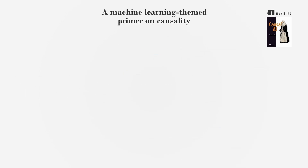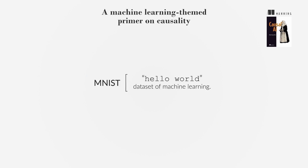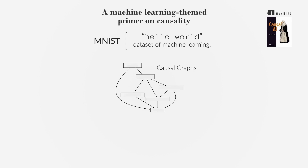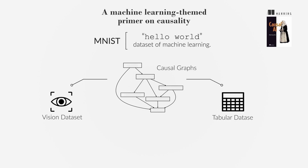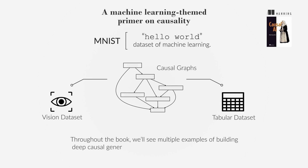In this chapter, we introduce causal modeling using the MNIST dataset — the Hello World dataset of machine learning. We'll see how causal graphs work just as well with this well-known computer vision dataset as they do with the tabular datasets typically associated with causal inference. Throughout the book, we'll see multiple examples of building deep causal generative models on these types of datasets.